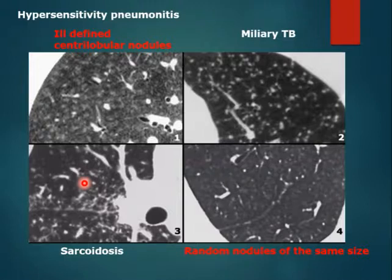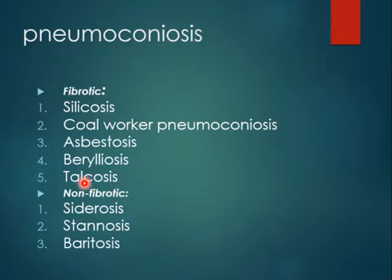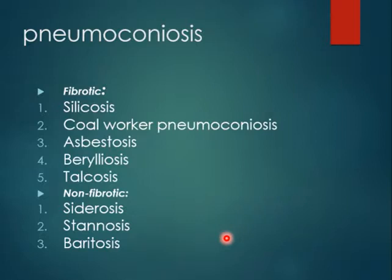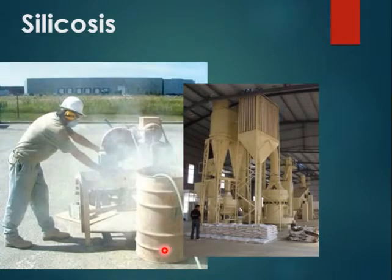Another type of interstitial lung disease is pneumoconiosis. Pneumoconiosis is due to work-related exposure to different kinds of materials. There are many different types, and the differential diagnosis between them is not always simple. The most famous ones are silicosis, coal worker pneumoconiosis, and asbestosis. The rest — like siderosis, stenosis, and baritosis — are less common and usually have non-specific findings. Chronic exposure over years results in interstitial lung disease.